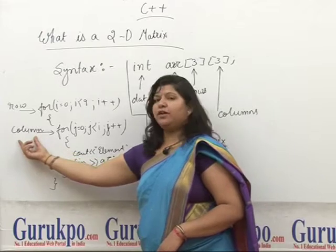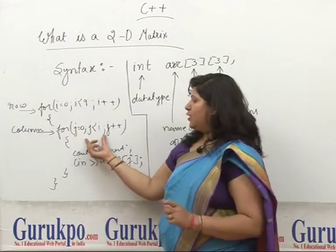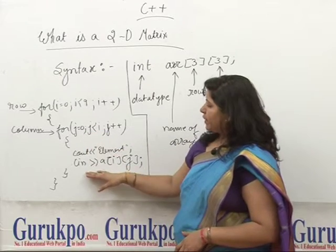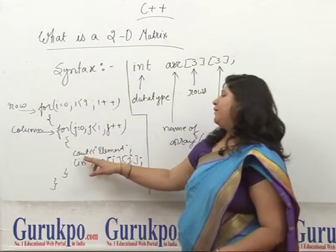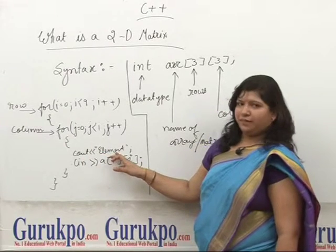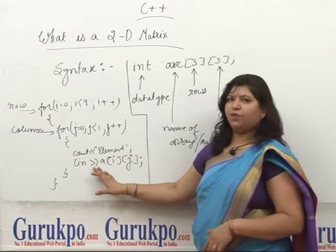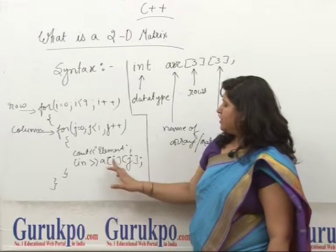And this j loop will particularly work on the columns. Now in the body of the loop, we have the cout statement which is the output or print statement. We have mentioned 'elements' here. Then cin will get the input from the user.